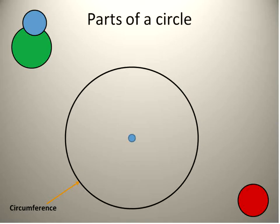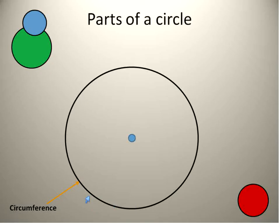And the circumference of the circle is the distance all the way around the outside. That's a vocabulary word we might not use quite yet, but we'll definitely come to. The circumference is the distance around the outside of the circle.